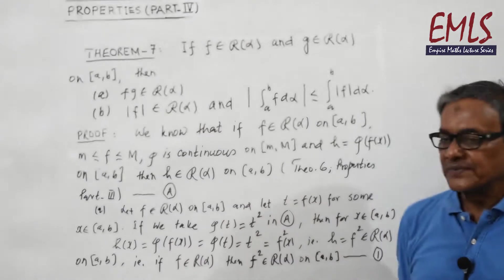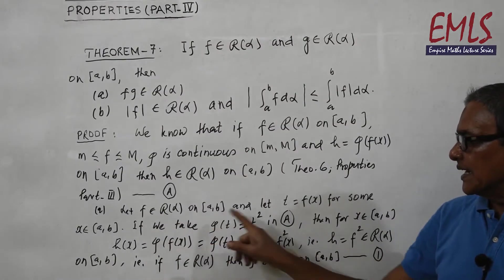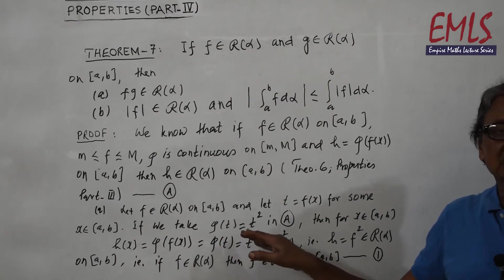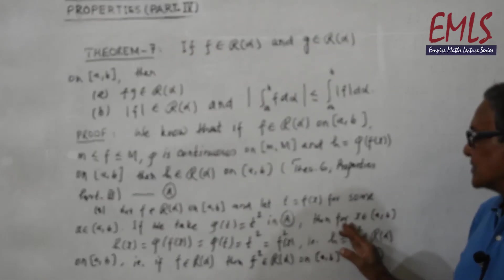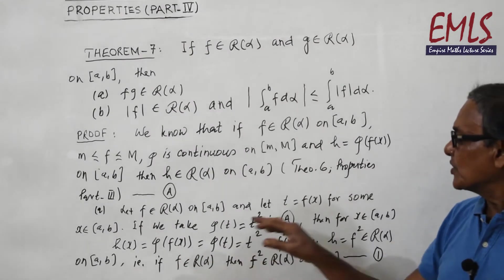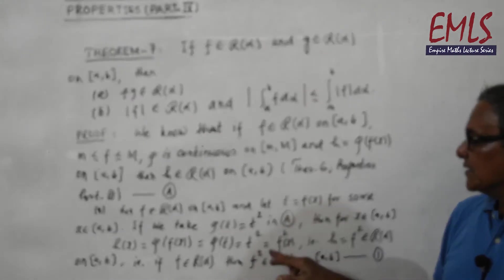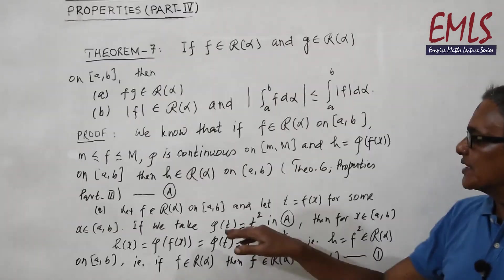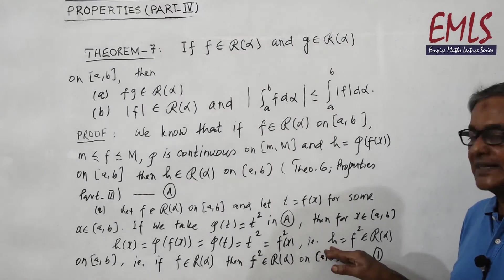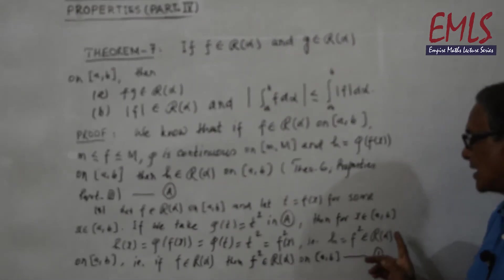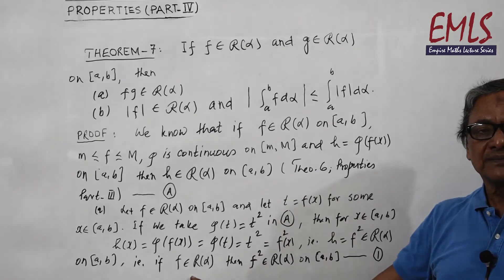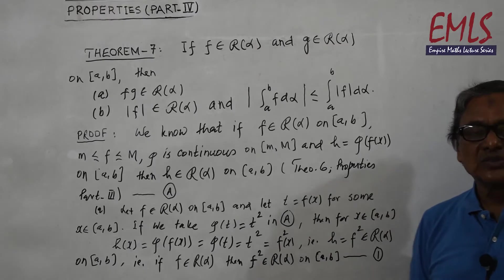For part (a): let f belong to Rα on [a, b] and let t = f(x) for some x in [a, b]. If we take φ(t) = t², then h(x) = φ(f(x)) = φ(t) = f²(x). So h = f² belongs to Rα on [a, b] by theorem number 6. That is, if f belongs to Rα then f² belongs to Rα on [a, b].